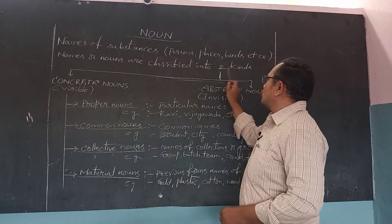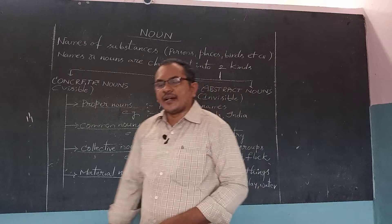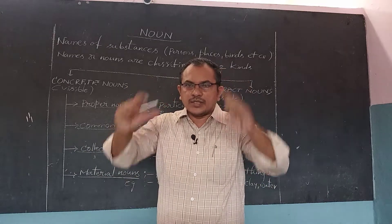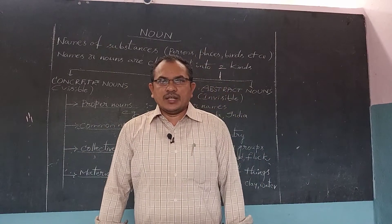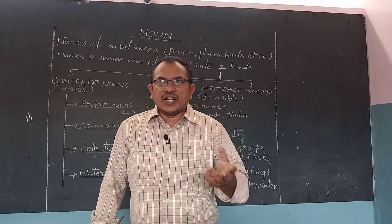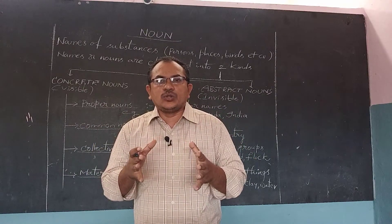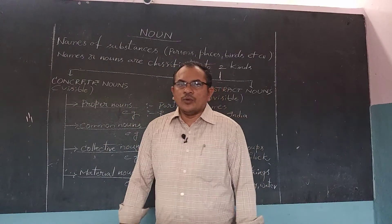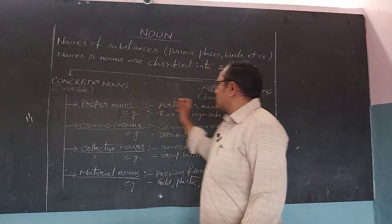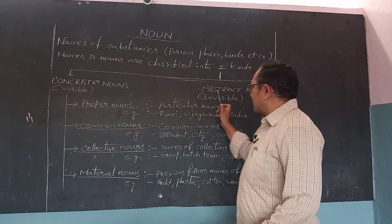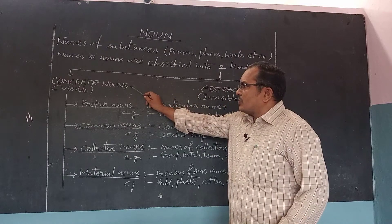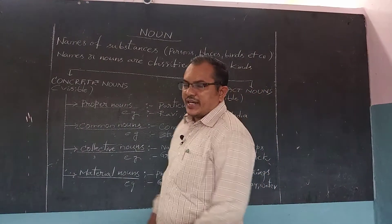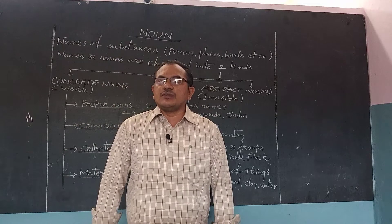Nouns are classified into two kinds. On the basis of visibility, they are known as concrete nouns and abstract nouns. Concrete nouns and abstract nouns.